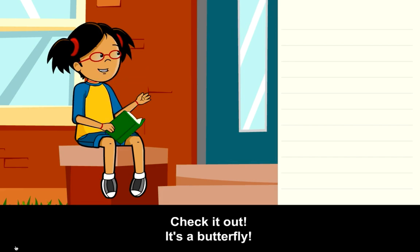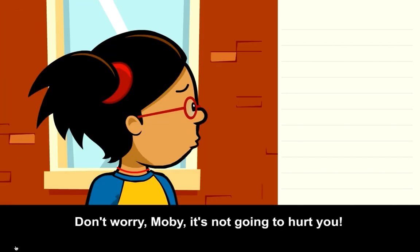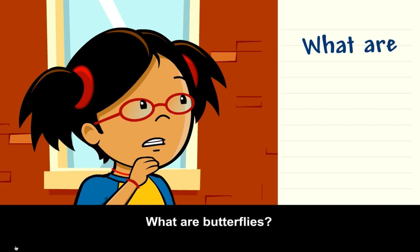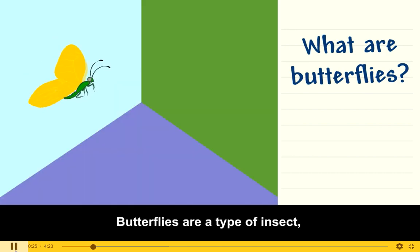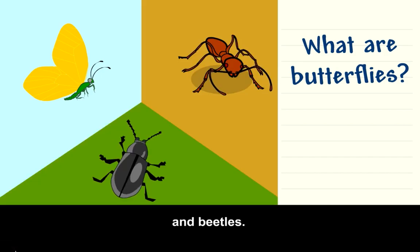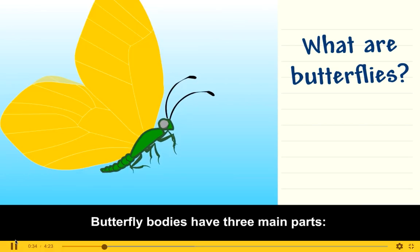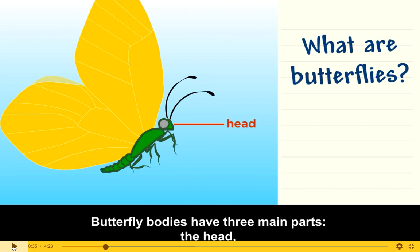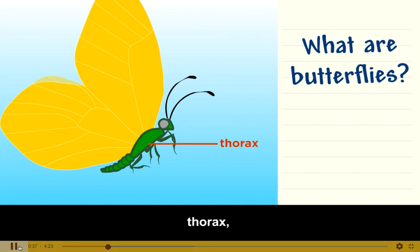Check it out, it's a butterfly. What are butterflies? What do you guys think? I want us to take a wild guess — are butterflies insects? Butterflies are a type of insect, like ants and beetles. Butterfly bodies have three main parts. Who could tell me one main body part of a butterfly? Look at your face — you need your eyes, right? Where are your eyes located? On your head. So I think butterflies' head is one of their main body parts. Their head.